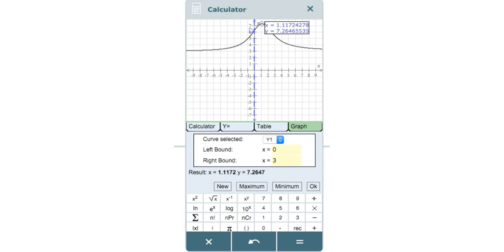What does this mean? I think it means that the maximum value is 7.26 grams per milliliter at 1.12 minutes, right? Correct.